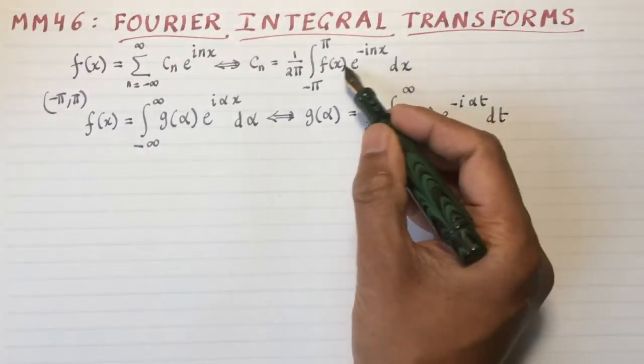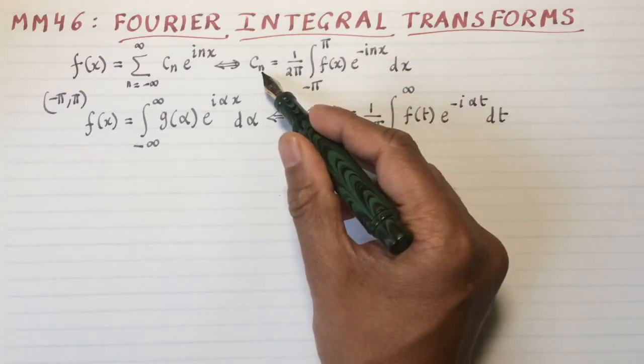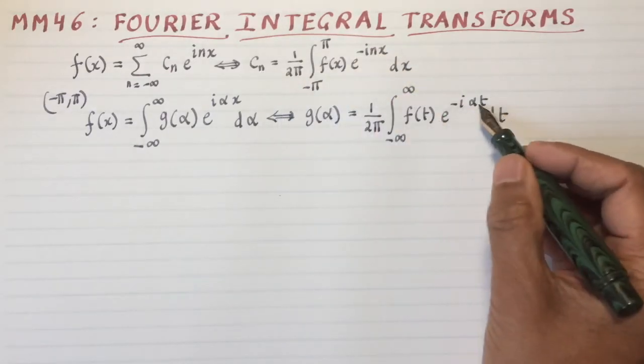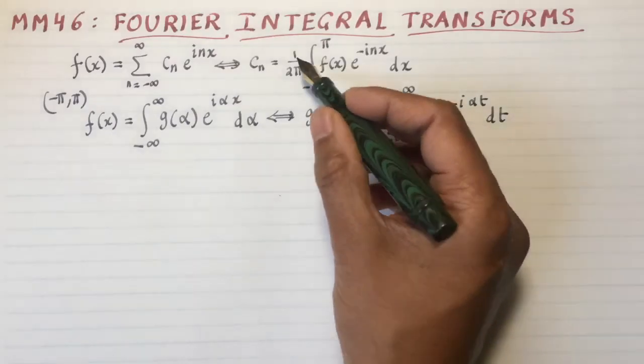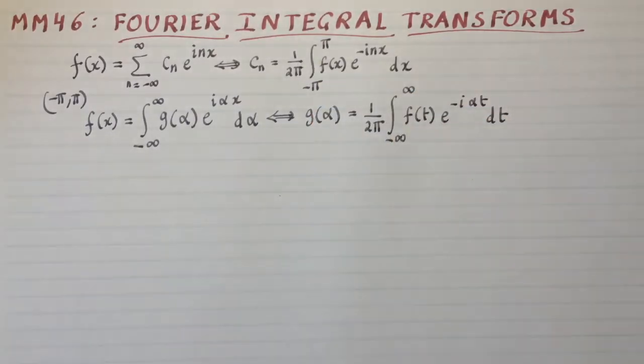If you integrate out the x, you get the n's surviving. Here if you integrate out the t's, you get the alpha surviving. The 1 over 2 pi is the only thing that connects the old version and the new version.